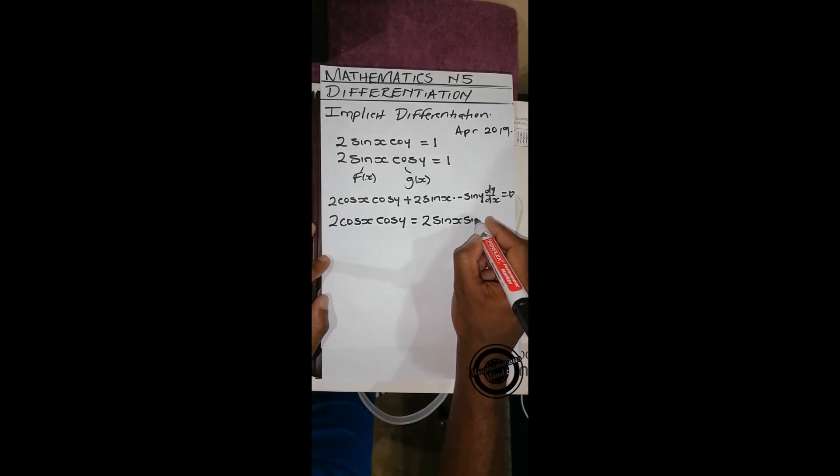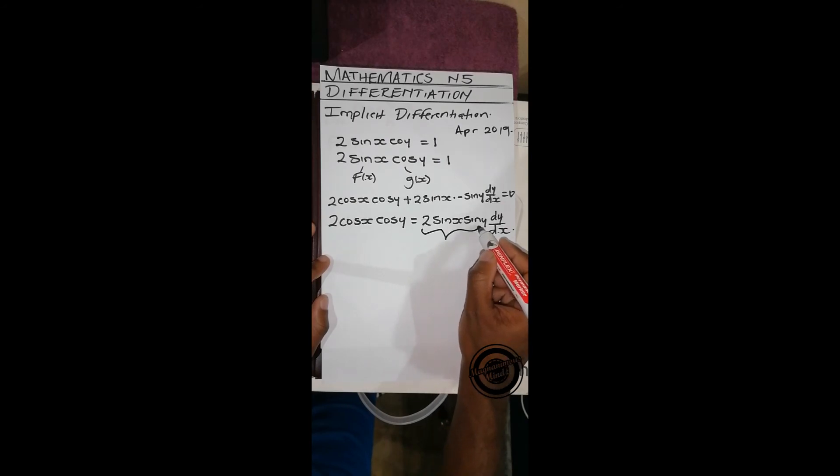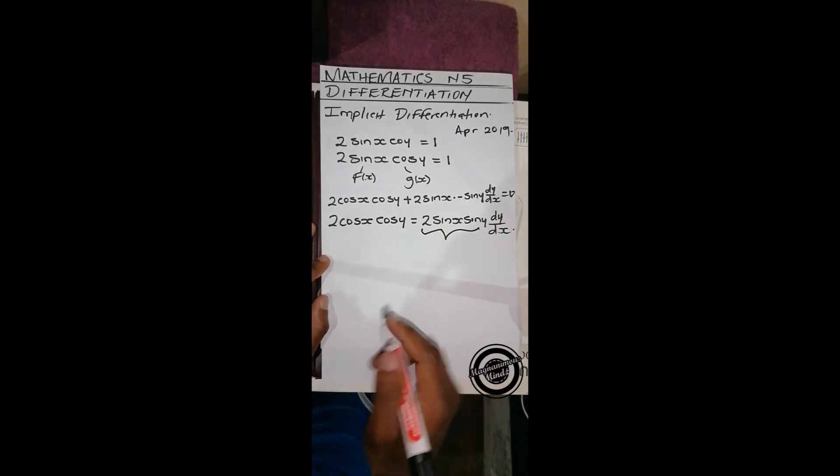sin y dy/dx. Then we divide both sides with this, so this side is going to cancel.